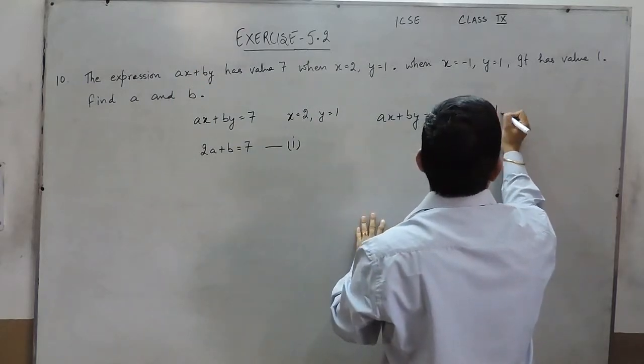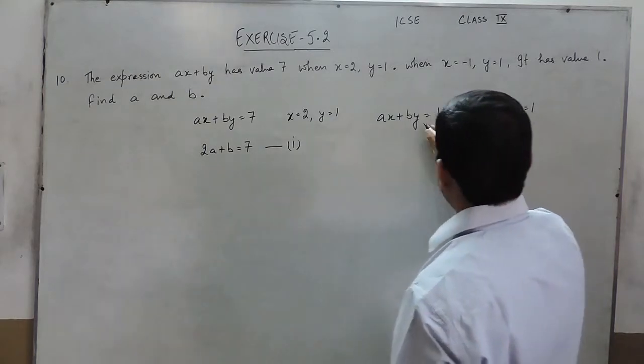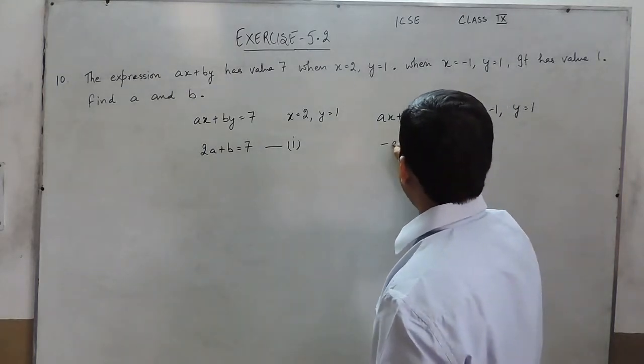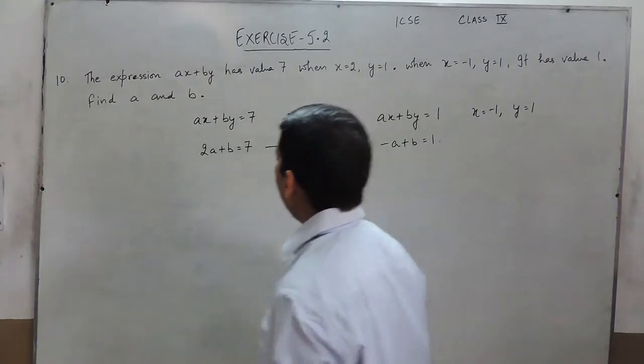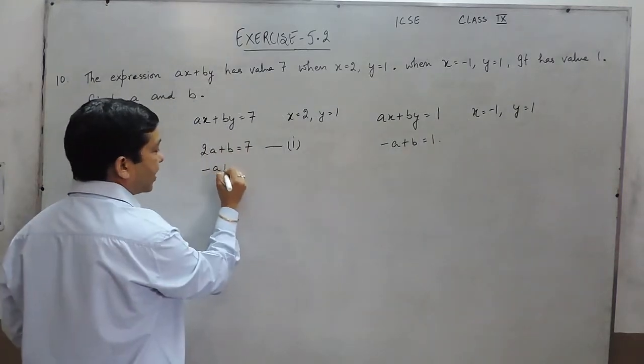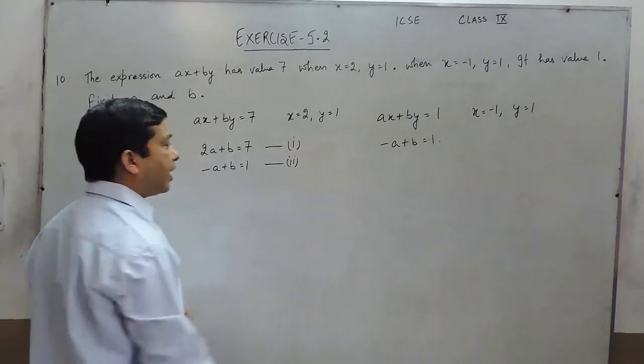Now the expression ax plus by has a value 1 when the value of x is minus 1 and the value of y is 1. If we put the value of x and y respectively, it becomes minus a plus b is equal to 1. So the second equation is minus a plus b is equal to 1.